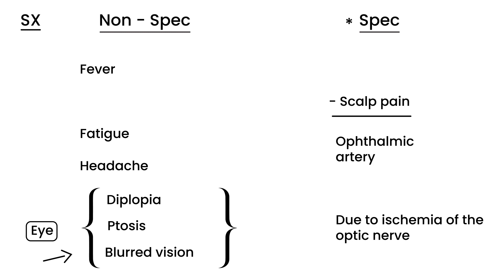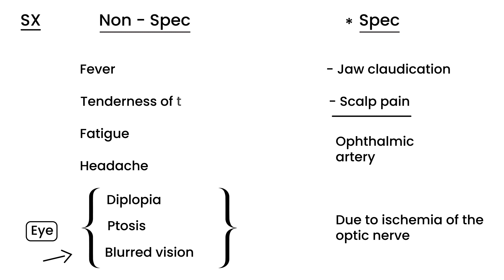One more specific symptom is jaw claudication — pain in the jaw. That's something you don't hear that much about in clinical vignettes, so if you see scalp pain and jaw claudication, that's pretty specific for temporal arteritis. And of course, something more obvious is tenderness of the temporal artery itself.